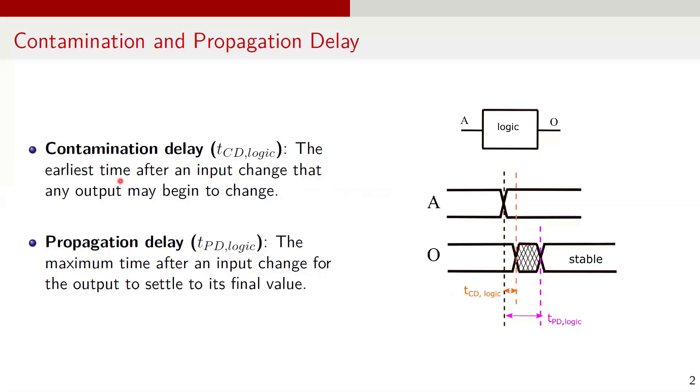Another important definition we must be familiar with to understand setup and hold time constraints is contamination delay and propagation delay of a block. Let's consider a block with one or more inputs and outputs. When an input changes, the output doesn't react immediately. It takes some time for the signal to propagate through the circuit and settle to a stable logic. This gives rise to two timing parameters: contamination delay, denoted as T-sub-CD logic, and propagation delay, denoted by T-sub-PD logic. Contamination delay is the earliest time after an input change that the output may begin to change, while propagation delay is the maximum time after an input change for the output to settle to its final value.